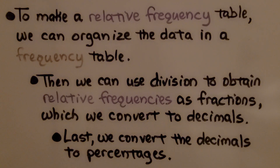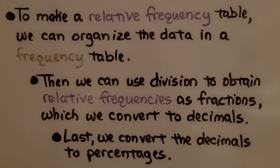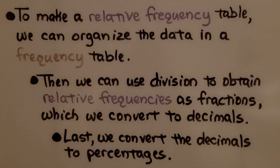To make a relative frequency table, we can organize the data in a frequency table. Then we use division to obtain relative frequencies as fractions, which we convert to decimals. Last, we convert the decimals to percentages.